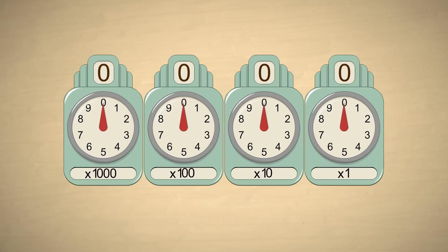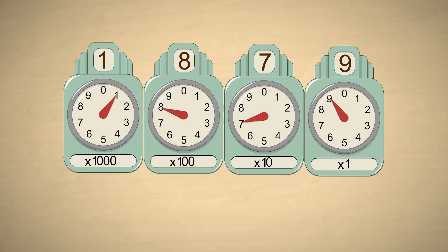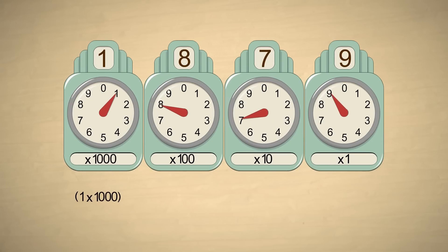The value of the decimal number is the sum of all its digits times their multipliers. For example, the value of the decimal number one thousand eight hundred seventy-nine is one times one thousand, plus eight times one hundred, plus seven times ten, plus nine times one.